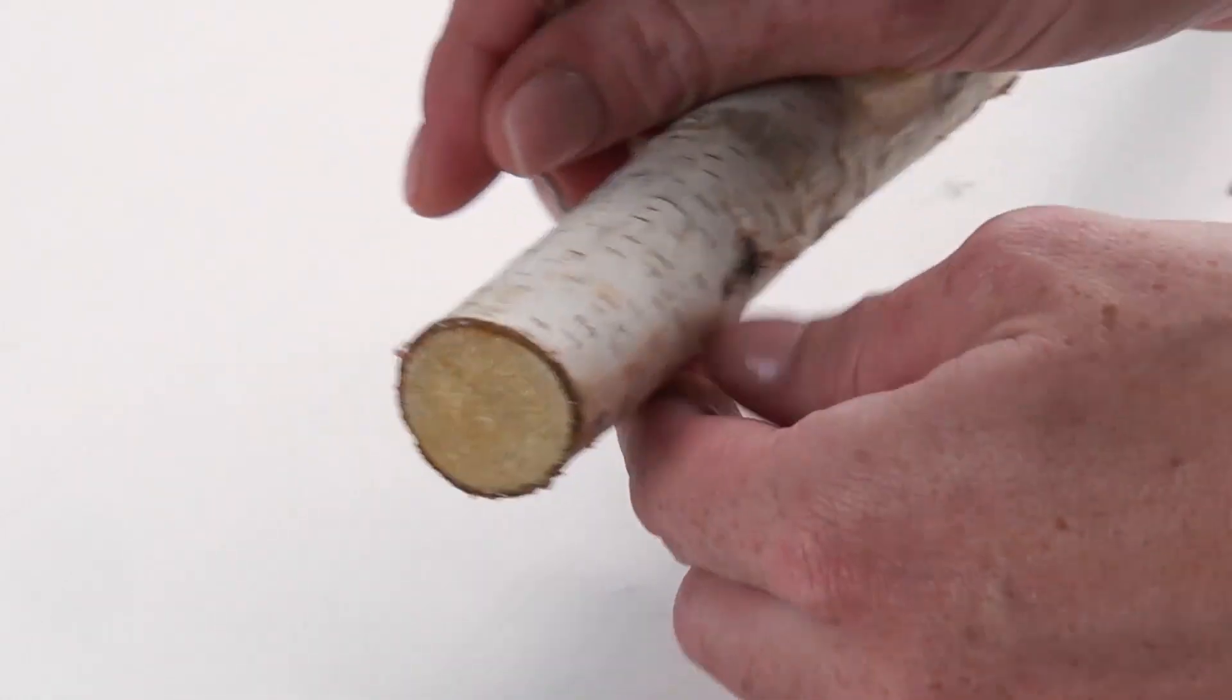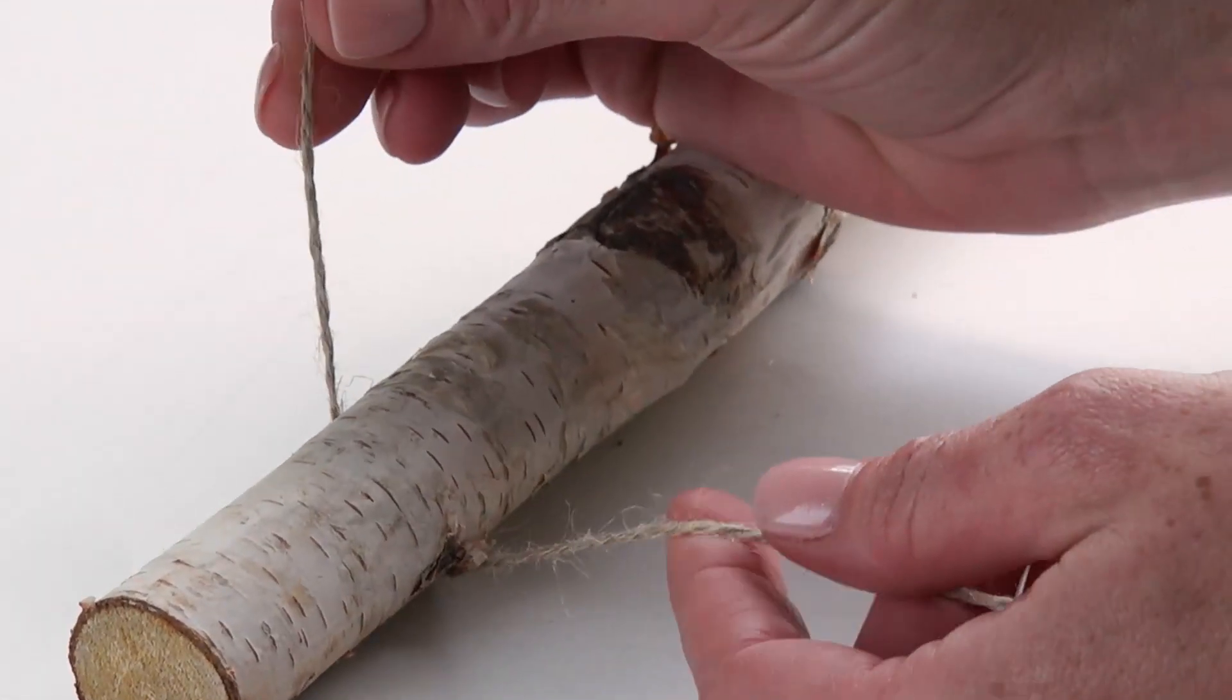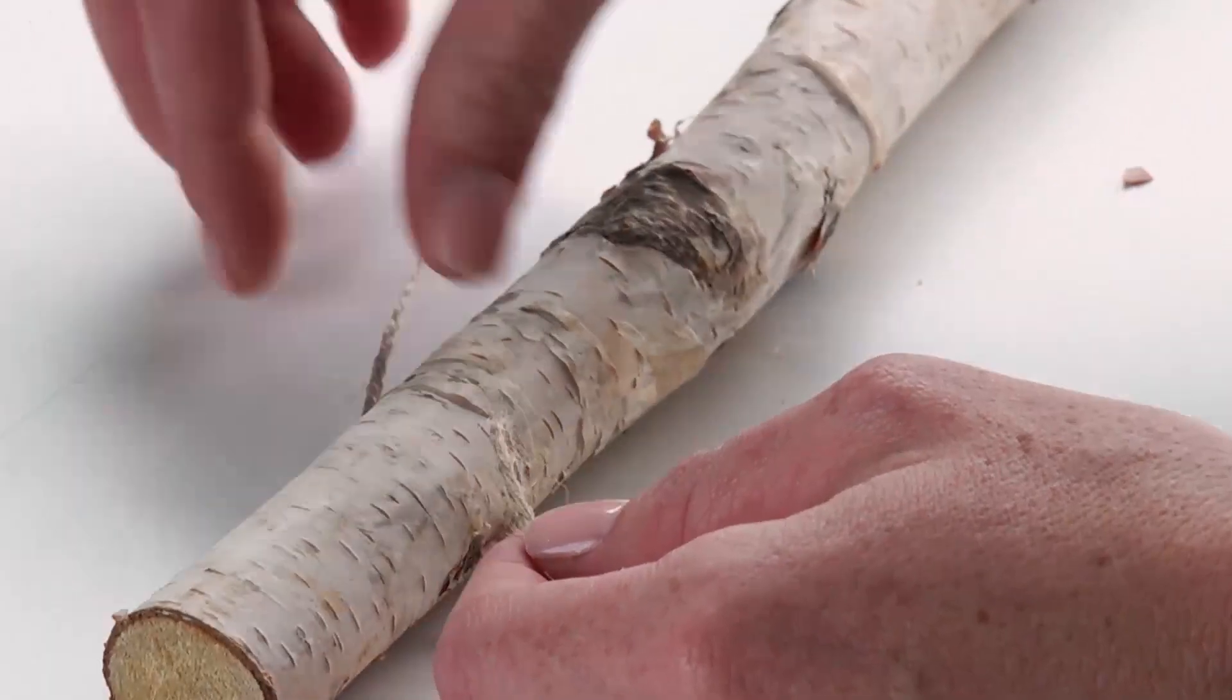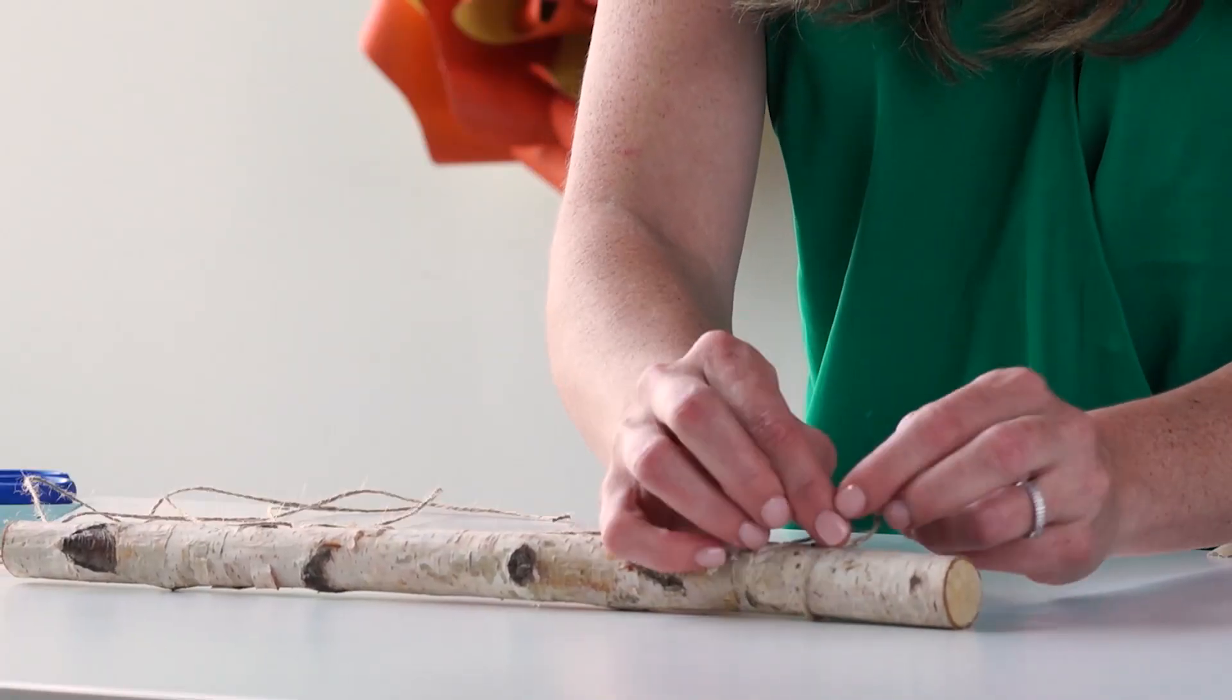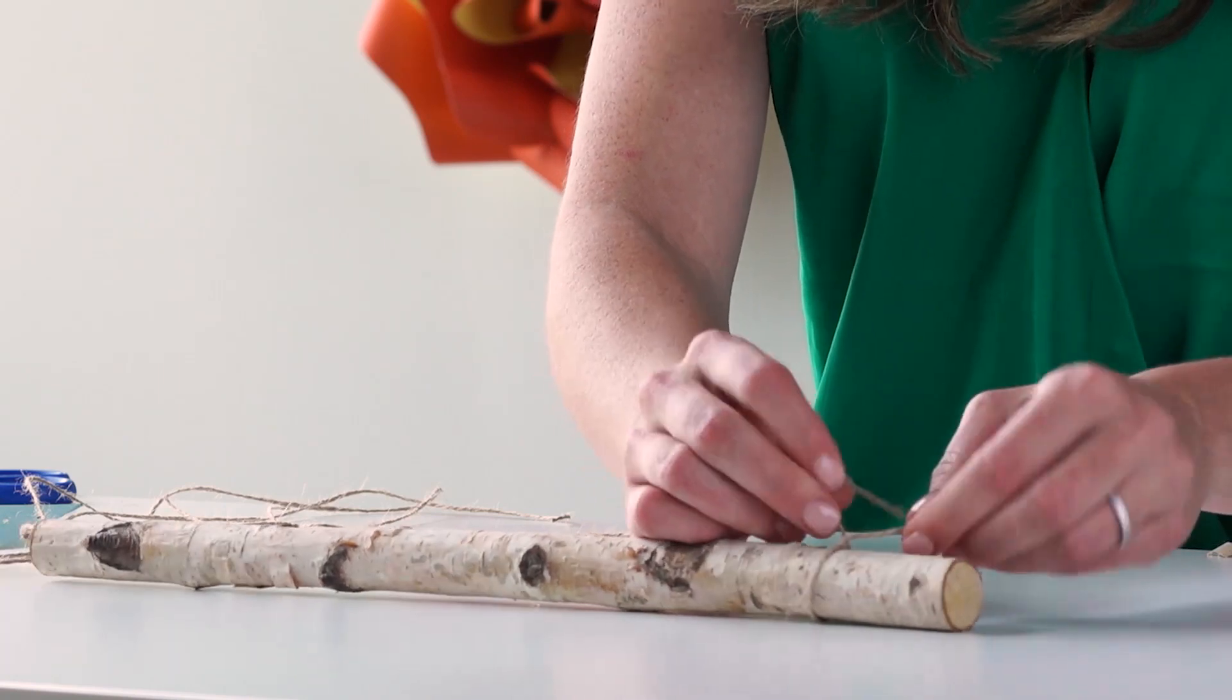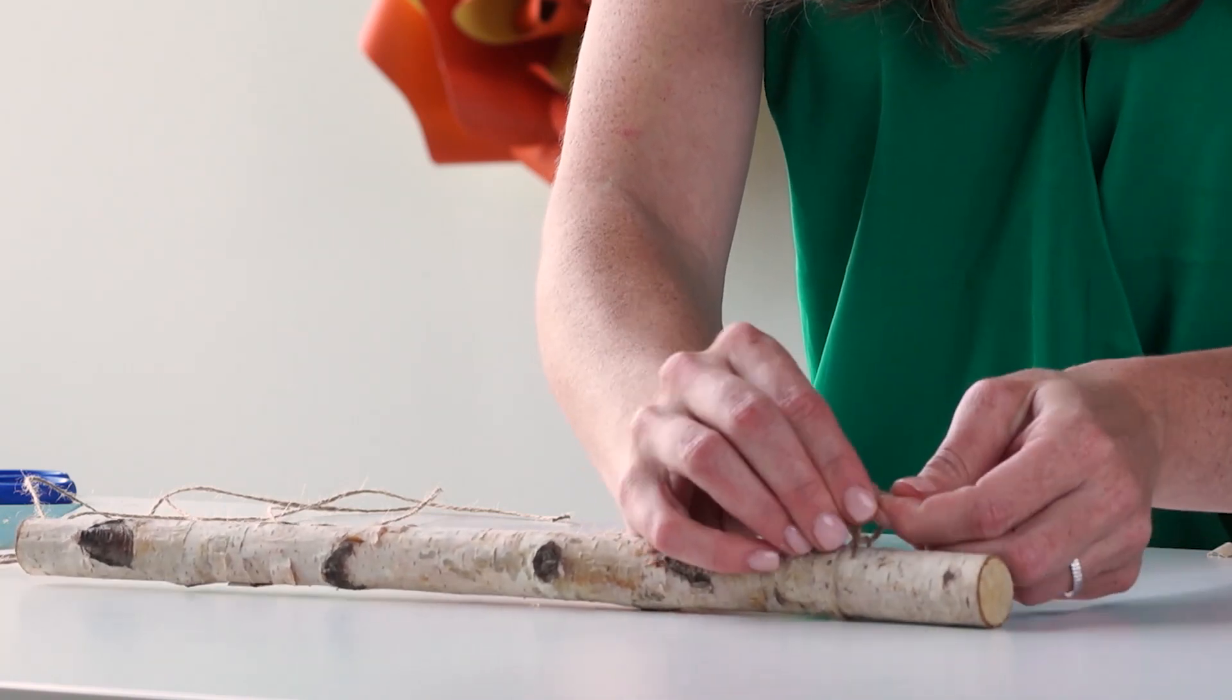I'm going to tie this twine around my branch. It's very simple. Do not overthink this. You're going to wrap it underneath your branch, knot it once through, and then make sure in case someone were to pull on this that things don't fall off, go ahead and give it an extra knot.